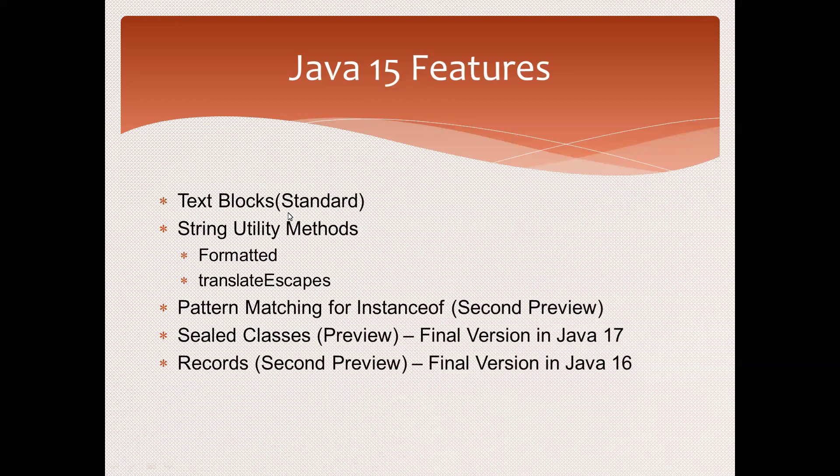From Java 10 onwards, a lot of string utility methods are available. In Java 15, there are two types of utility methods: one for formatted and another for translate escape symbols.